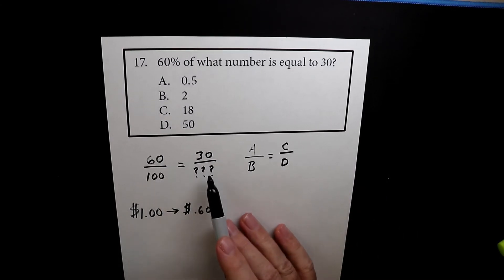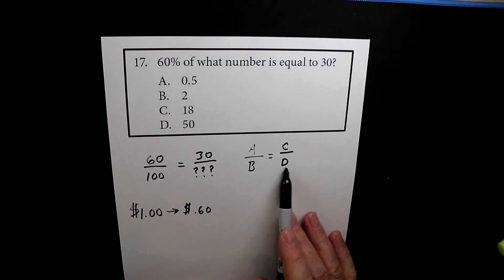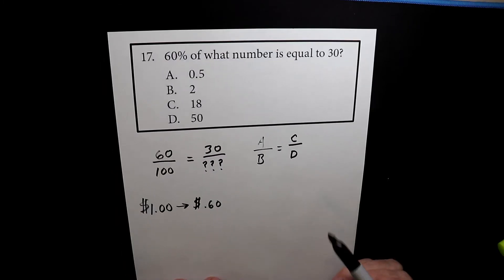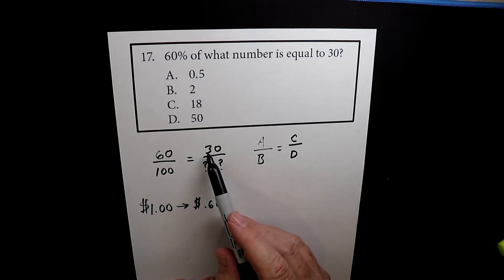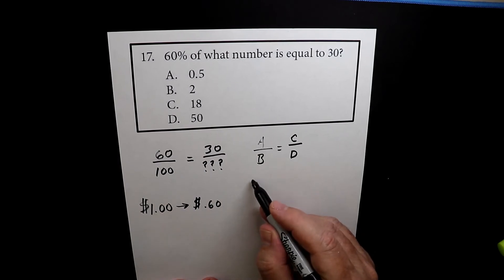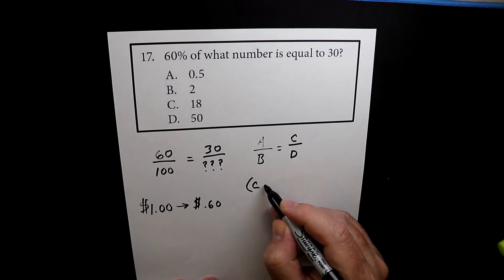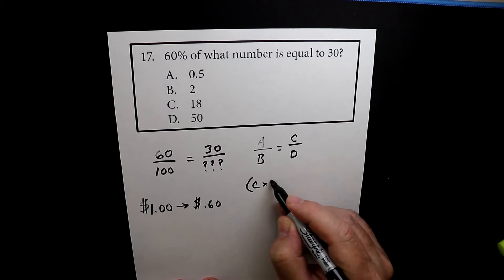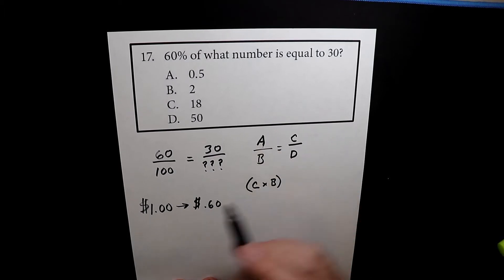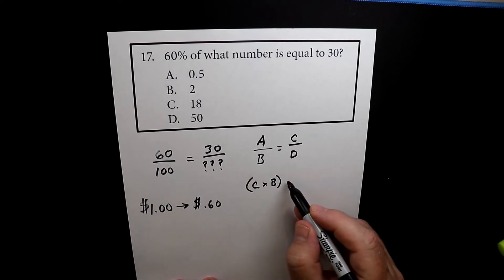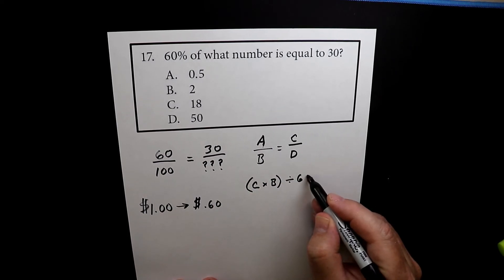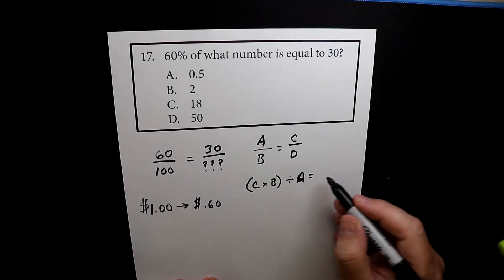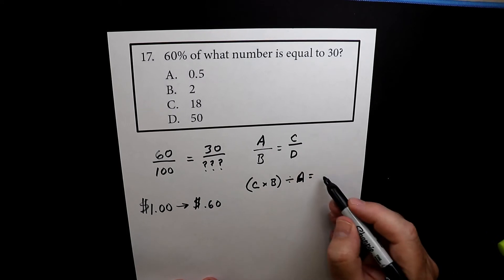A, B, C, D. D we don't know. So we want to find out what D is. So this is the way you can set this up. We cross multiply. So we go 30 times 100, so we do C times B. And then we're going to divide by 60, which is A. And that will give us the unknown, which is D.